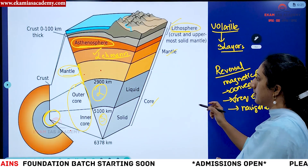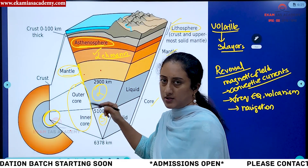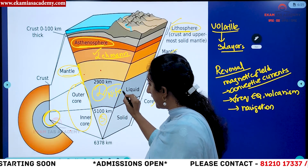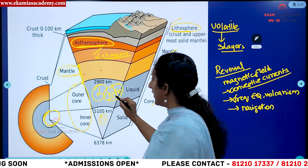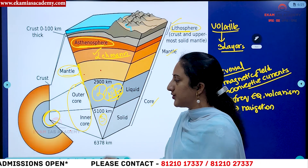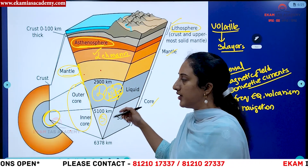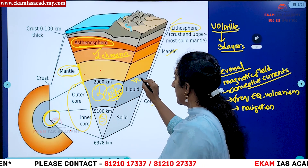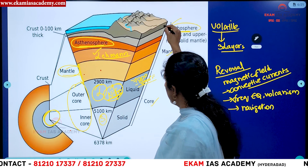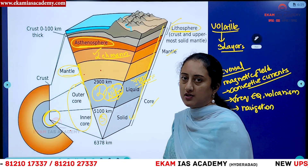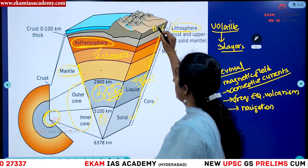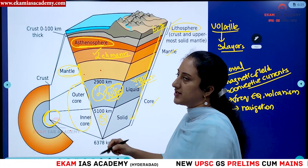The core is also called the NiFe layer because it is mainly composed of nickel (Ni) and iron (Fe). It is the densest part of the Earth, with temperatures ranging from approximately 7,000 to 8,000 degrees. Temperature and pressure continue to increase as you go deeper. The crust, by contrast, is mainly made up of basalt and granite.